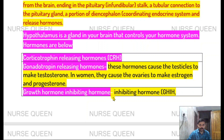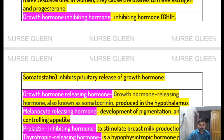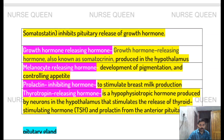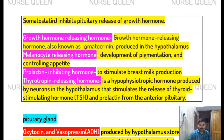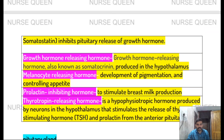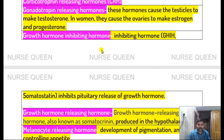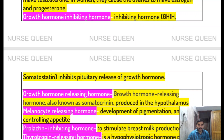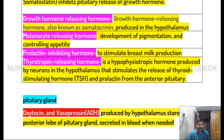Growth hormone inhibiting hormone is somatostatin. Somatostatin inhibits pituitary release of growth hormone. Growth hormone releasing hormone is also known as somatocrinine, produced by the hypothalamus and stored in the anterior lobe of the pituitary gland.